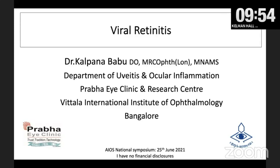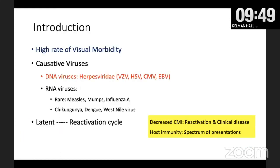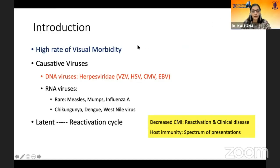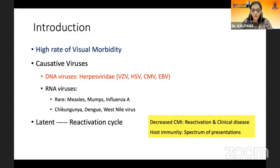At the outset, I would like to thank the All India Ophthalmic Society for this invitation. Viral retinitis is definitely an ophthalmic emergency, as it is associated with a high rate of visual morbidity. The viruses usually implicated belong to the herpes viridae group — viruses which remain latent in our body, and when there is decreased cell-mediated immunity, it causes reactivation and clinical disease. The host immunity plays an important role in the type of presentation we see.